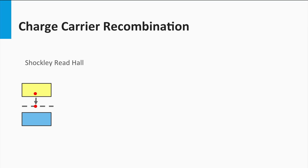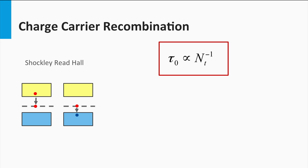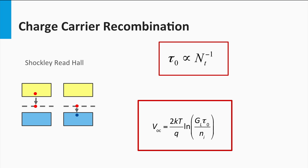Let's start with Shockley-Reed-Hall recombination. The origin of this mechanism is the trapping of the mobile electron at defects that have an energy state in the bandgap. The electron is trapped until a mobile hole finds the electron, after which both charge carriers recombine. Shockley-Reed-Hall recombination depends logically on the defect density. In the simplest approximation, the minority charge carrier lifetime is reciprocally dependent on the defect density N_T. This means the larger the defect density, the shorter the lifetime and the smaller the open-circuit voltage. The defect density limits the extent to which the quasi-Fermi levels can be split.